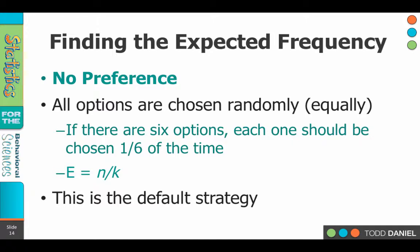The trick with a chi-square is always finding the expected frequency. In this example of randomness, or no preference, what we will do is take the total number of options and divide that into the total number of people choosing among those options.